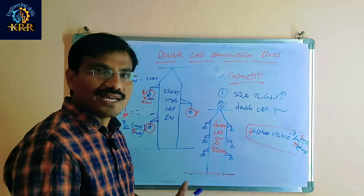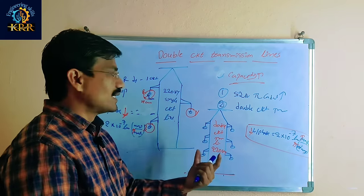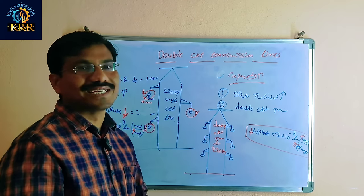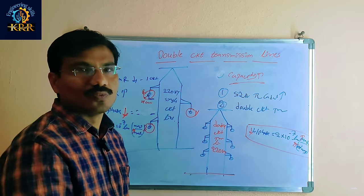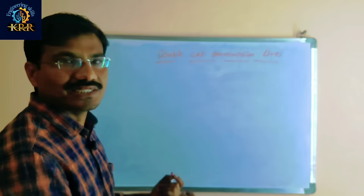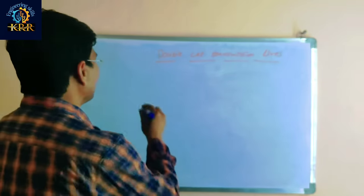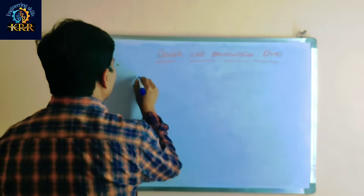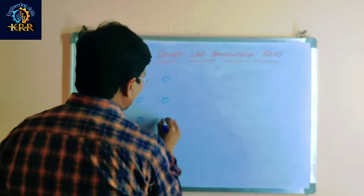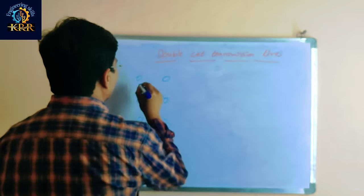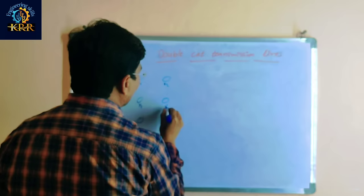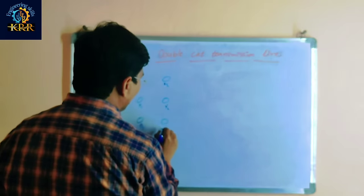Next, if you go for the calculation — how to calculate the GMD and Self-GMD for the double circuit transmission line — take this example. This is the double circuit transmission line with conductors labeled R1, R2, Y1, Y2, B1, and B2.